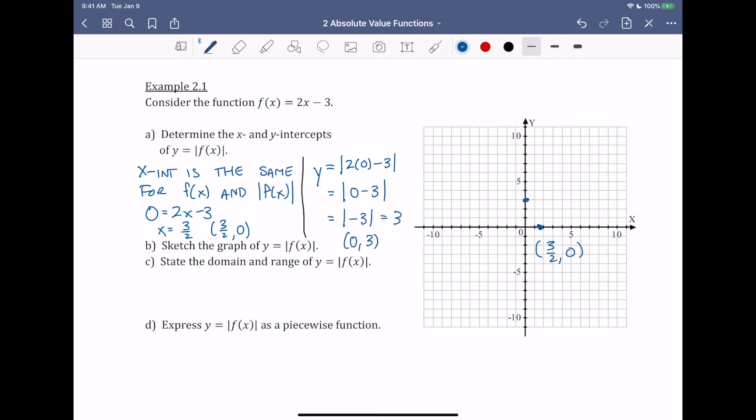Part B, sketch the graph of y = |f(x)|. Based on the shape of the graph from the previous page, I know that my graph is going to come down through my y-intercept, and then it reflects and changes direction at the x-intercept.